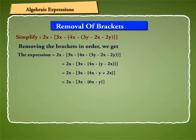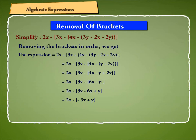This is equal to 2x minus 3x minus 6x minus y. Now removing curly brackets, we get 2x minus 3x minus 6x plus y, which is equal to 2x minus minus 3x plus y.